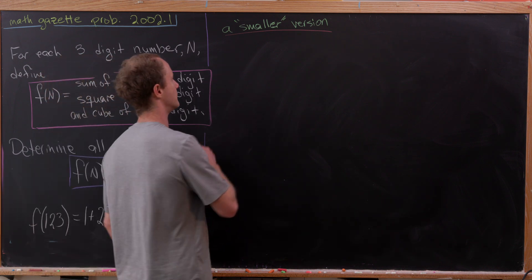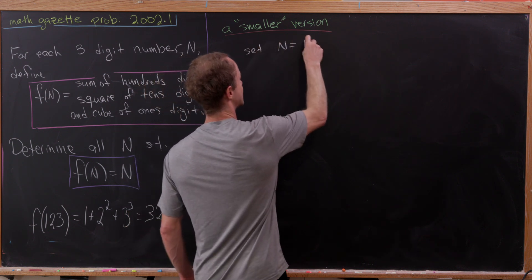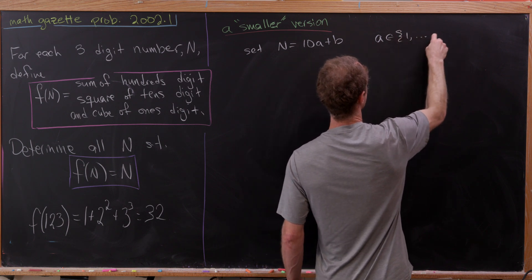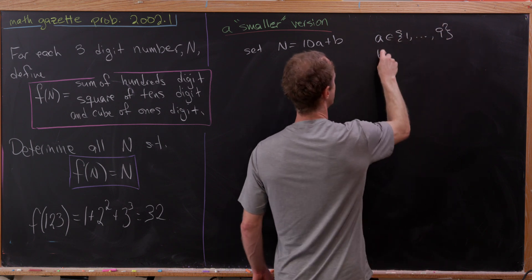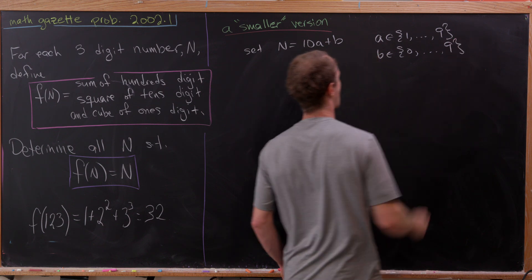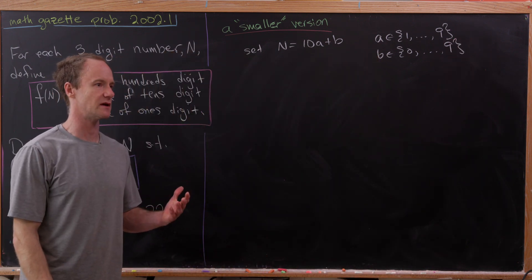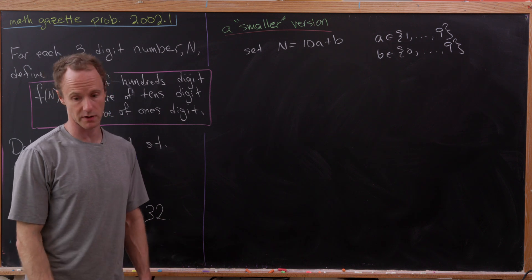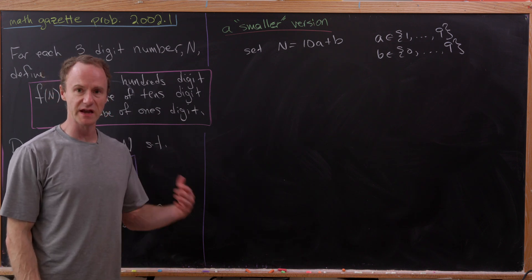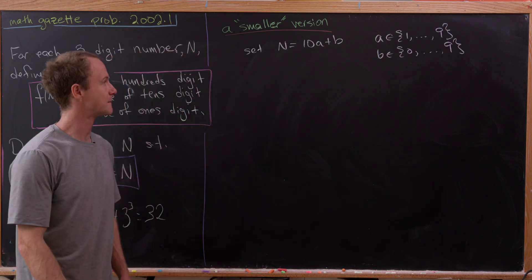Maybe we would set n equal to 10a plus b, where a comes from the set 1 to 9, and b comes from the set 0 to 9. a here cannot be equal to 0 because we want this to be a real two-digit number. Again, we're doing a smaller version. We'll get to our three-digit case in just a second.